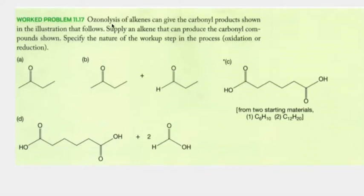It says ozonolysis of alkenes can give the carbonyl products shown in the illustration that follows. Supply an alkene that can produce the carbonyl compound shown, and specify the nature of the workup — whether it's oxidative or reductive conditions. Let's go ahead and start with A.